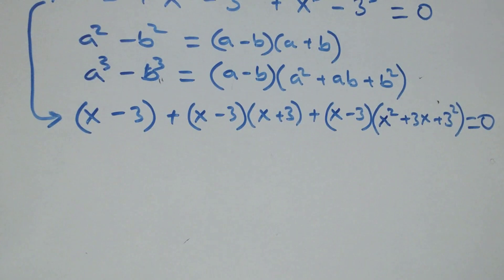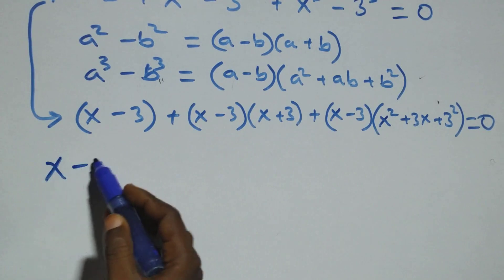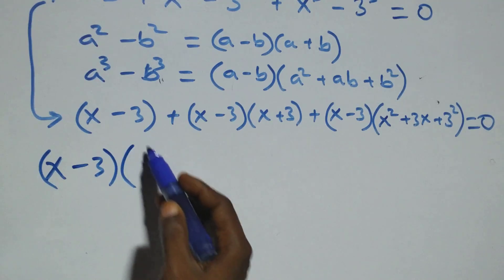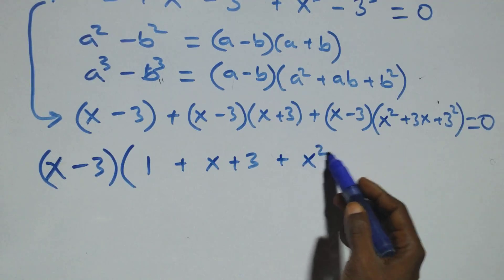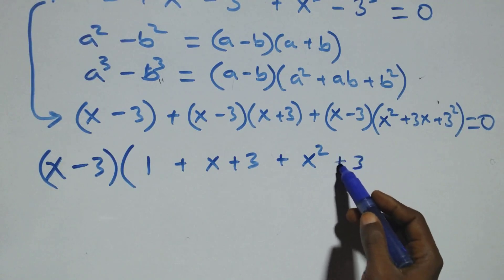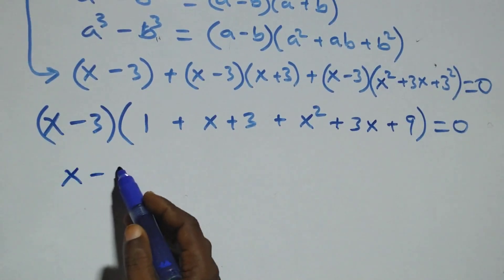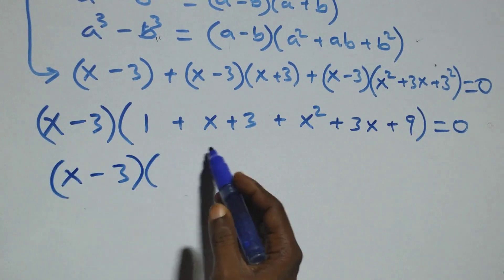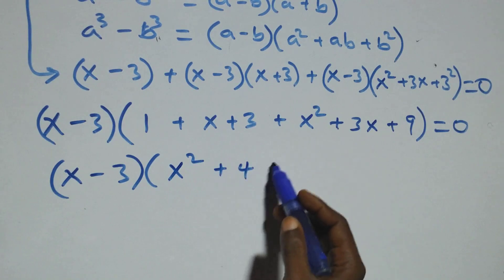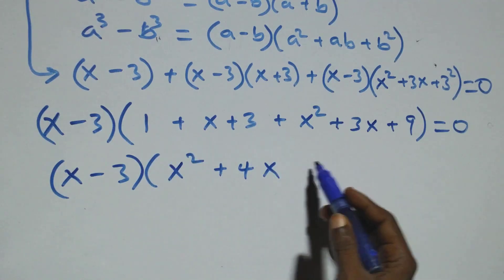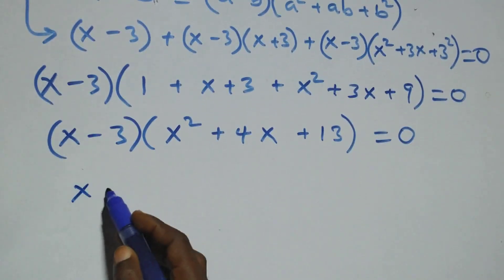Next step here, to factor what is common out — x minus 3 is common. When we factor it out we have (x minus 3) into brackets, then open brackets here we are left with 1, then plus we have x plus 3, then plus here we are left with x squared plus 3x plus 3 squared which is 9, plus bracket equals to 0. We can bring this together and rearrange: x squared plus x plus 3x equals x squared plus 4x, then 1 plus 3 plus 9 equals 13.